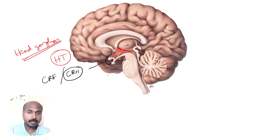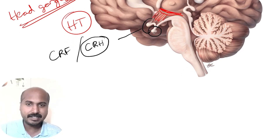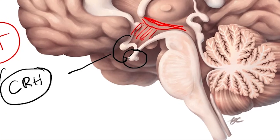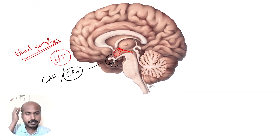CRH specifically acts on the pituitary gland — a small pea-shaped gland located in the sella turcica. It acts on the anterior pituitary, specifically on the corticotrophs.